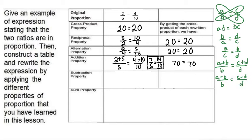Plugging in our numbers that we had in our original proportion, 2 minus 5 over 5 is equal to 4 minus 10 over 10. And 2 minus 5 is negative 3, so negative 3 over 5 is equal to 4 minus 10 is negative 6, so negative 6 over 10.